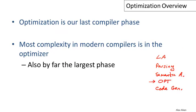Optimization actually comes before code generation because we want to improve the program before we commit it to machine code, but it is of course the last phase we've discussed. Optimization fits in between semantic analysis and code generation. In modern compilers, this is where most of the action is — it usually has by far the most code, and it's also the most complex part of the compiler.